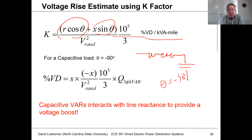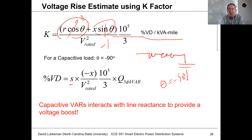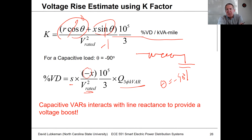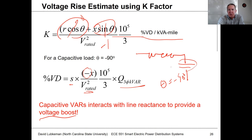If I substitute theta equal to minus 90 degrees into the equation, cosine of minus 90 degrees is simply zero, and sine of minus 90 degrees goes to minus one. So when I compute my voltage change, this is going to be the line length times minus the line reactance divided by the voltage squared — this is a line-to-neutral value — times 10 to the fifth divided by three, times whatever the capacitor value is in terms of k-bar. The interpretation is that a negative percent voltage drop term means instead of a voltage drop, we get a voltage boost. It's the interaction between the line reactance and the capacitance that gives us this voltage boost effect.